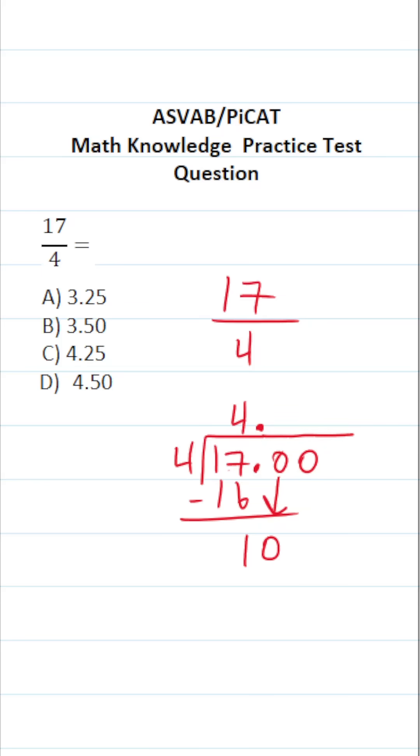Now the question is, how many times does 4 go into 10 without going over? It's going to be 2 times. 4 times 2 is 8. 10 minus 8 is 2.